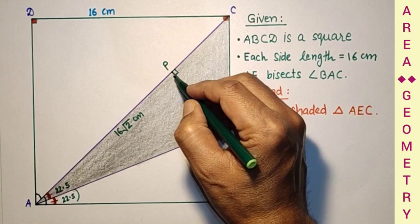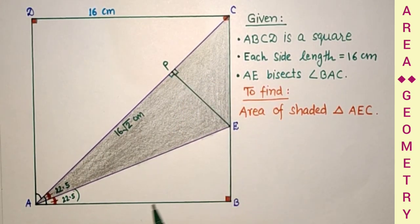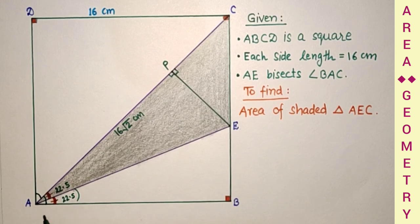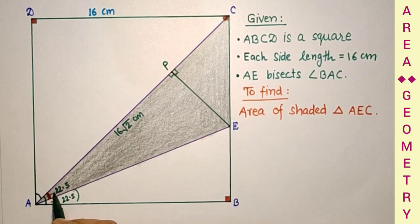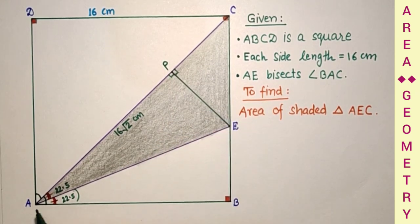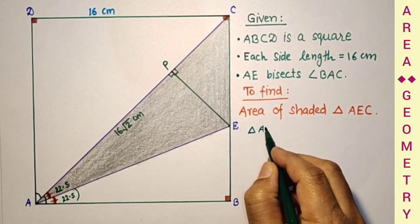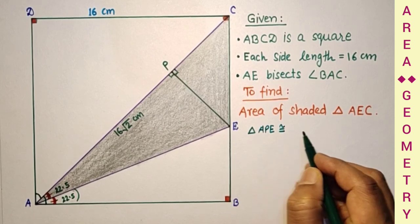These two angles are equal. This is 90, this is 90, and this side is common. So if we consider these two triangles ABE and APE, this angle equals this angle, both are 90. This side is common in both triangles. Therefore triangle APE is congruent to triangle ABE.